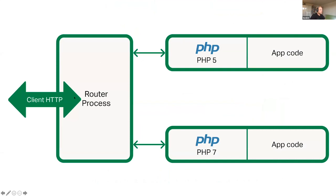A client sends a request to the router process, which then routes it to the appropriate configured application. Because language modules are encapsulated as unit modules, you can run PHP 5, PHP 7, Node.js, and Ruby applications all on the same unit instance — and unit can dynamically route traffic to the right application at request time.